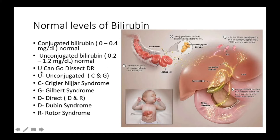Here's a mnemonic that's going to help you know whether a syndrome involves unconjugated or conjugated bilirubin. You can dissect it as: U CAN GO DISSECT DR. The U stands for unconjugated bilirubin. The C in CAN stands for Crigler-Najjar syndrome. The G in GO stands for Gilbert's syndrome. The D in DISSECT stands for direct bilirubin. The D in DR stands for Dubin-Johnson syndrome, and the R stands for Rotor syndrome.